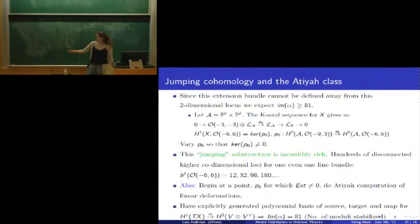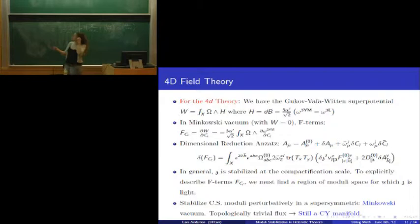But what we really want to do is, noting that all this structure is here, noting that this bundle depends very strongly on complex structure moduli, we want to actually do the Atiyah computation. Begin at a point p_0 for which this extension class is non-zero, and actually compute the image of the Atiyah map, and find out what happens. And, in fact, we can do this computationally. We find that here, Im(α) is 81. So the presence of this rank 2 SU(2) bundle stabilizes 81 out of 83 complex structure moduli.